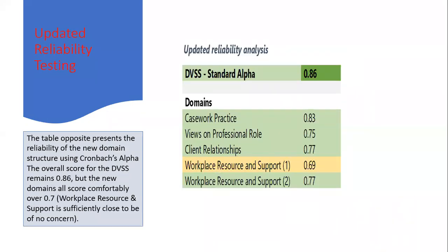This slide shows that we updated the reliability testing using these new domains. Overall, the survey instrument maintained its good score of 0.86. The new domains generally had scores above 0.7 — the acceptable threshold — apart from one: workplace resource and support, which scored 0.69. But we felt that was sufficiently close to be of no concern.